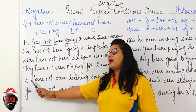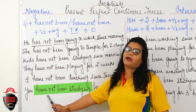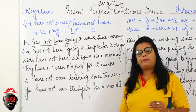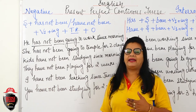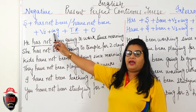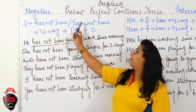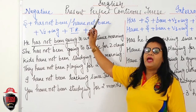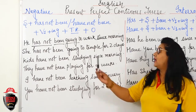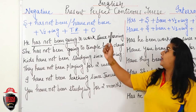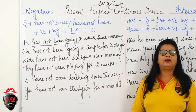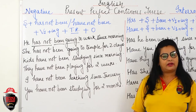Has is used with singular, have with plural. If it is Present Perfect Continuous Tense, giving time reference is very important. If time reference is not given, the meaning of the sentence will not be clearly expressed.